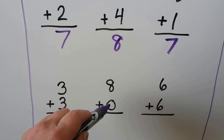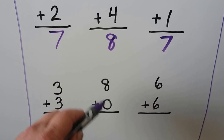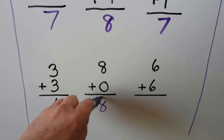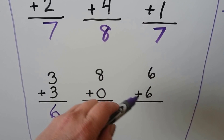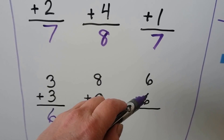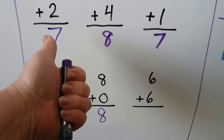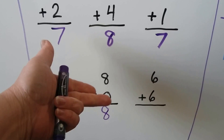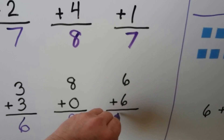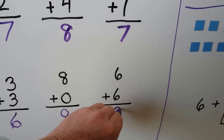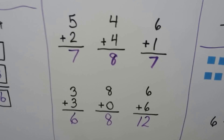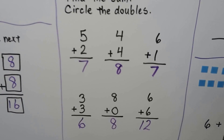8 plus 0: when we add 0 to a number, the number stays the same, so it's 8. 6 plus 6: we start with the 6 and count on 6 — 7, 8, 9, 10, 11, 12. So 6 plus 6 is equal to 12. Now we need to circle the ones that are doubles.